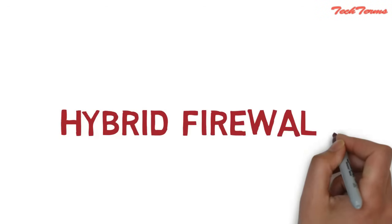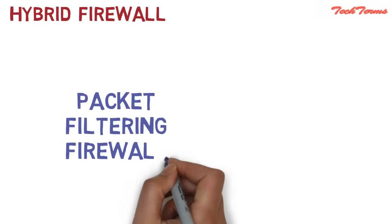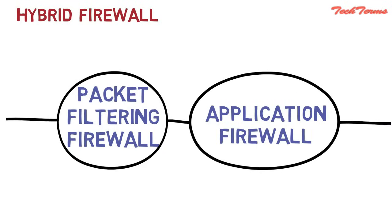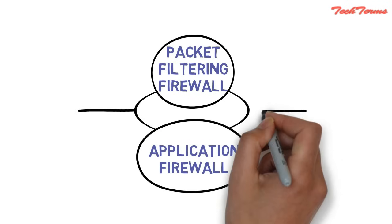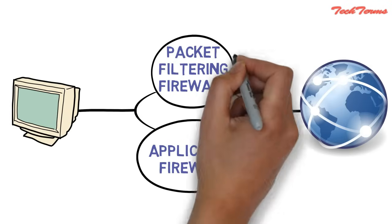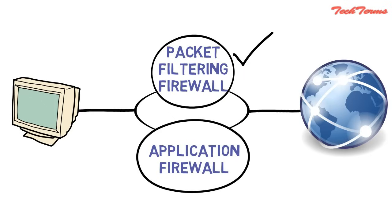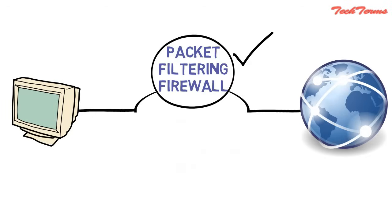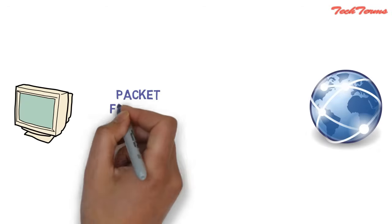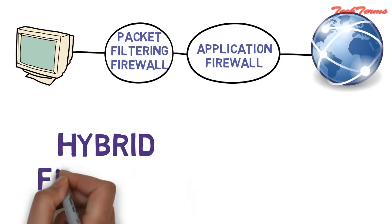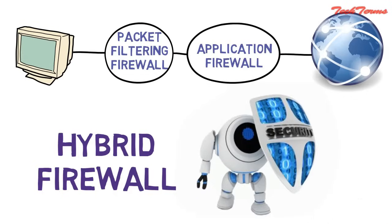Third is hybrid firewall. Hybrid firewalls combine packet filtering firewall and application firewall in series to enhance security. If they are connected in parallel, then the security of the connection will be reduced to the parameters defined by the packet filtering firewall — that is, the application firewall will be of no use. For this reason, hybrid firewalls use packet filtering and application firewall in series. As a result, hybrid firewalls provide the best security compared to packet filtering and application firewalls.